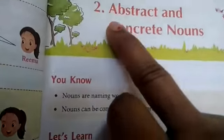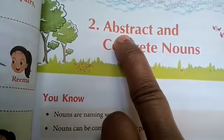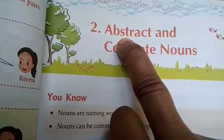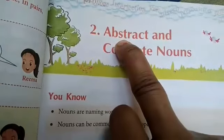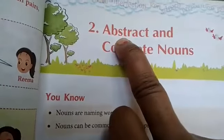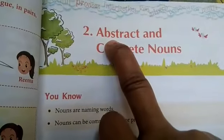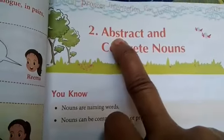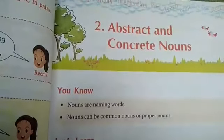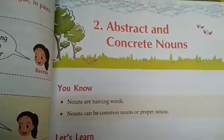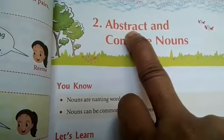Once again I repeat: abstract noun woh hota hai jis se hum touch nahi kar sakte — jo imaginary hota hai. Jaise, you are very brilliant — toh aap ki intelligence ko hum touch nahi kar sakte. The child is very beautiful and we cannot touch the quality of the child. The child is very honest and we cannot touch it. These all are called abstract nouns.